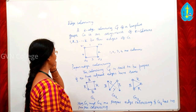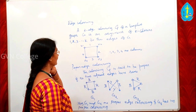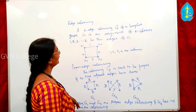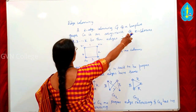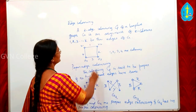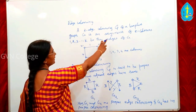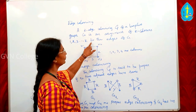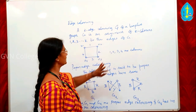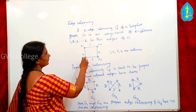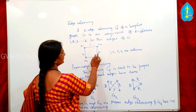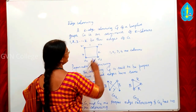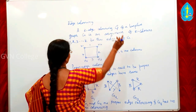Today we are going to see the edge colouring of a graph. A K edge colouring tau of a loopless graph G is an assignment of K colours 1, 2, 3 up to K to the edges of G. When we assign colours to the edges of G, it is called K edge colouring, denoted by tau.